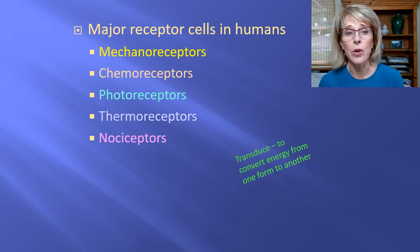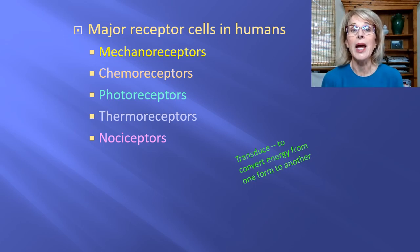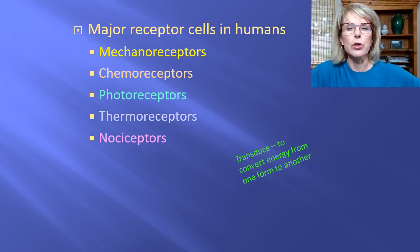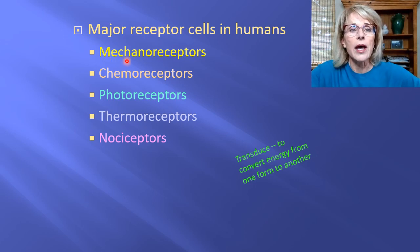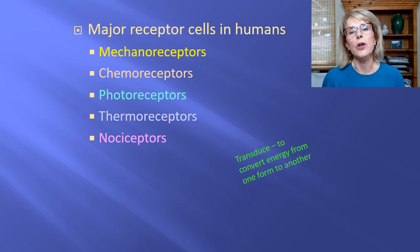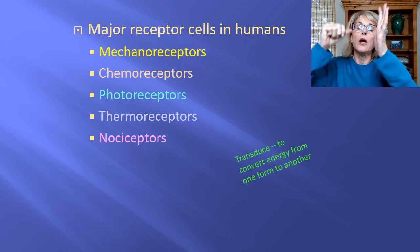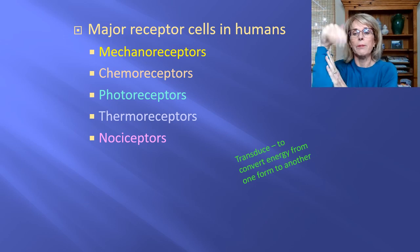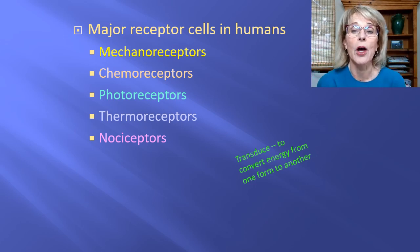There are three main categories of sensory receptor cells for our special senses, and then two extra categories to know. The first category are the mechanoreceptors. Mechanoreceptors can detect a mechanical force — what's a mechanical force? A mechanical force would be like being pressed or being stretched or being bent.